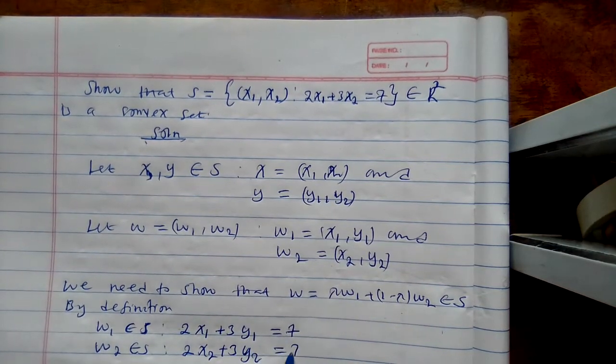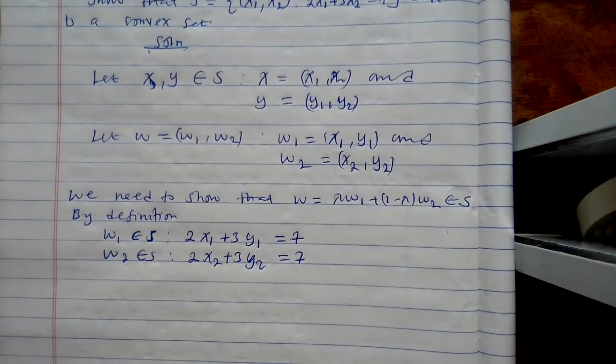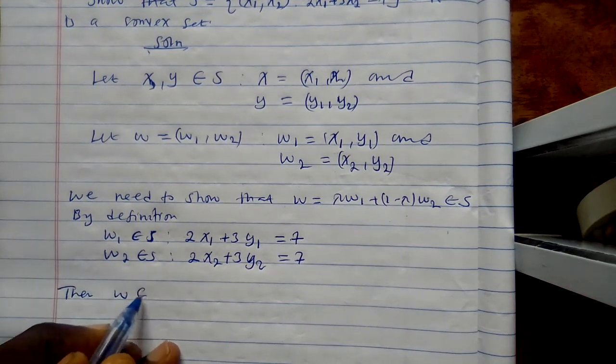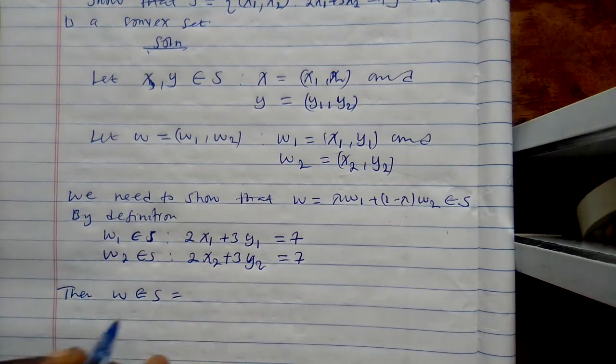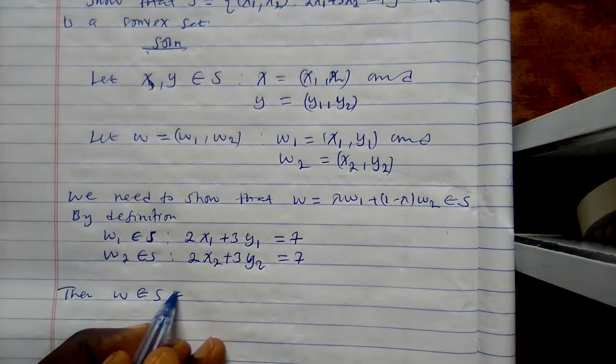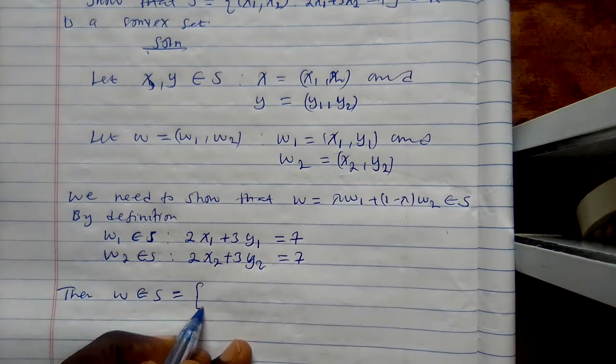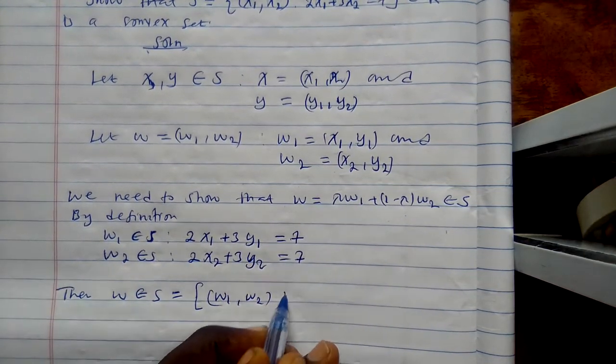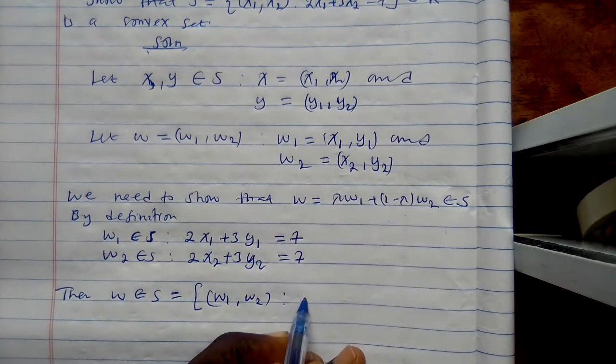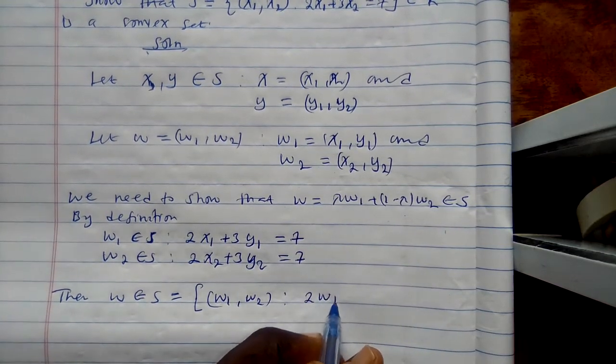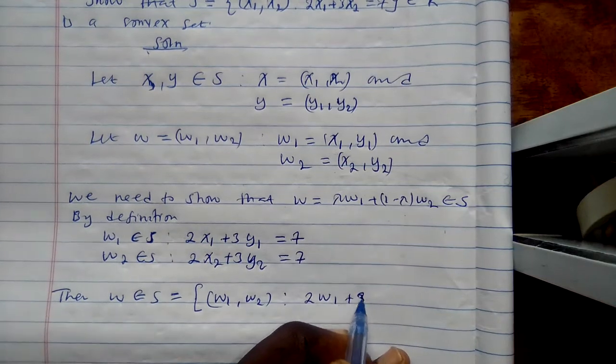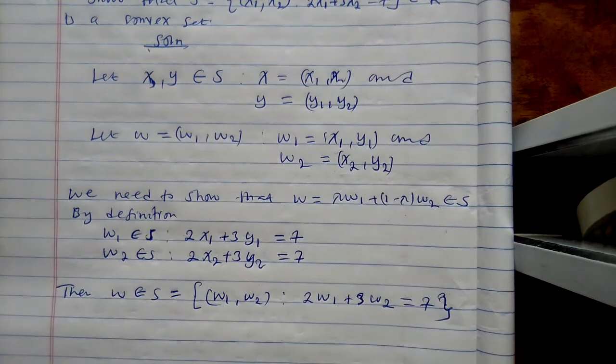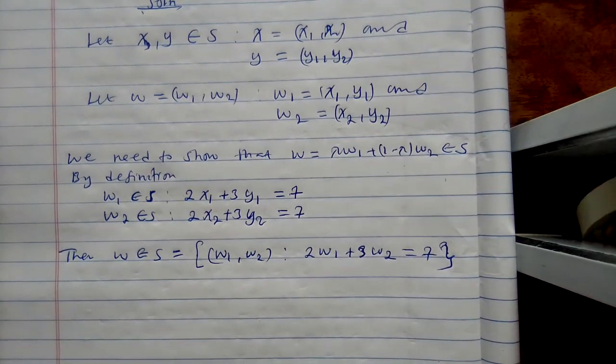Therefore, or then, W is in S which is equal to (w1, w2) such that 2W1 plus 3W2 is equal to 7. Is that clear?